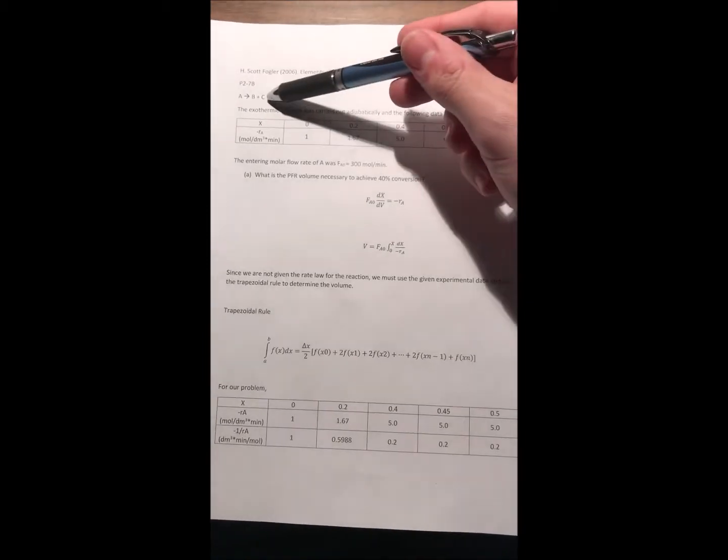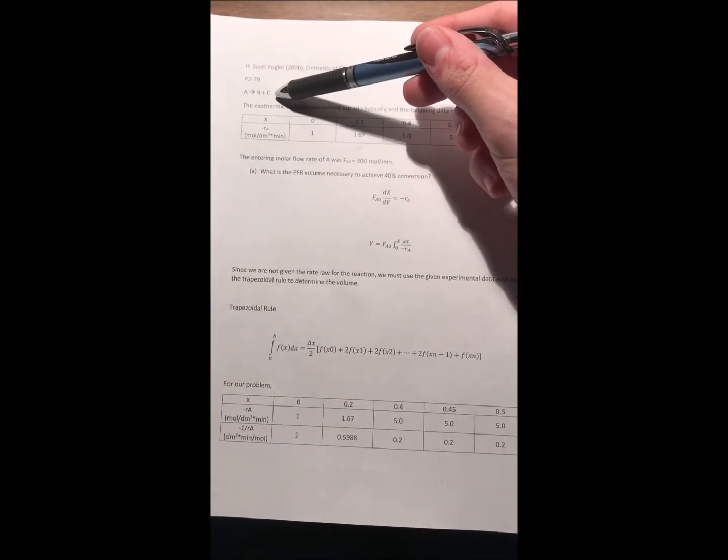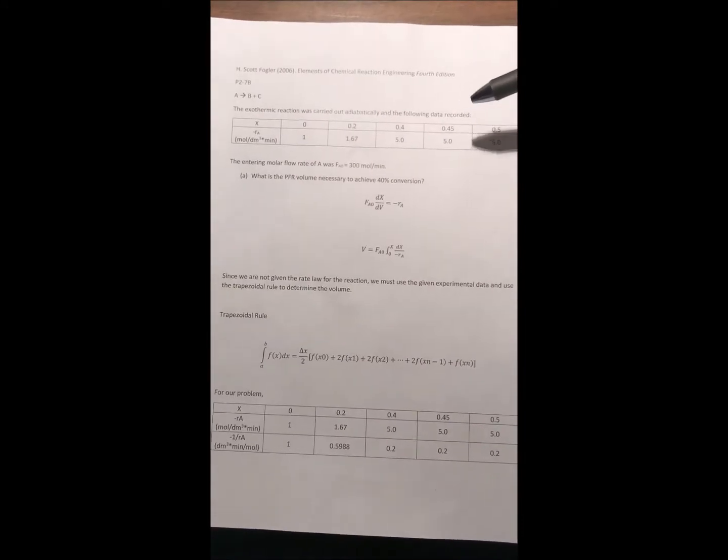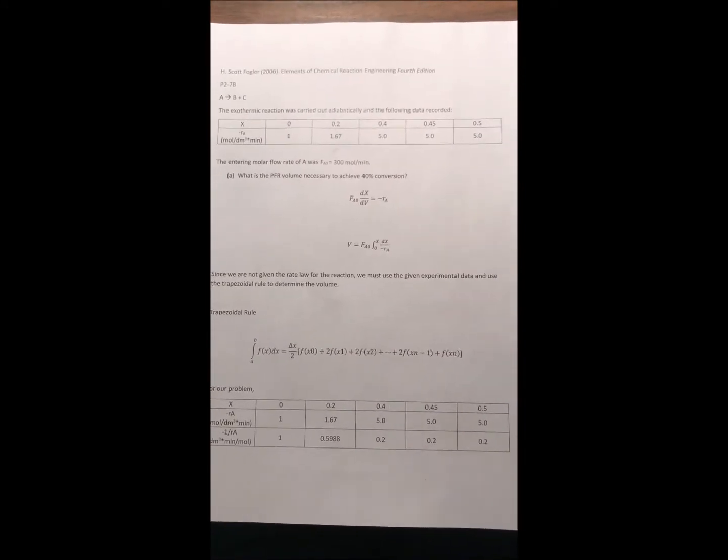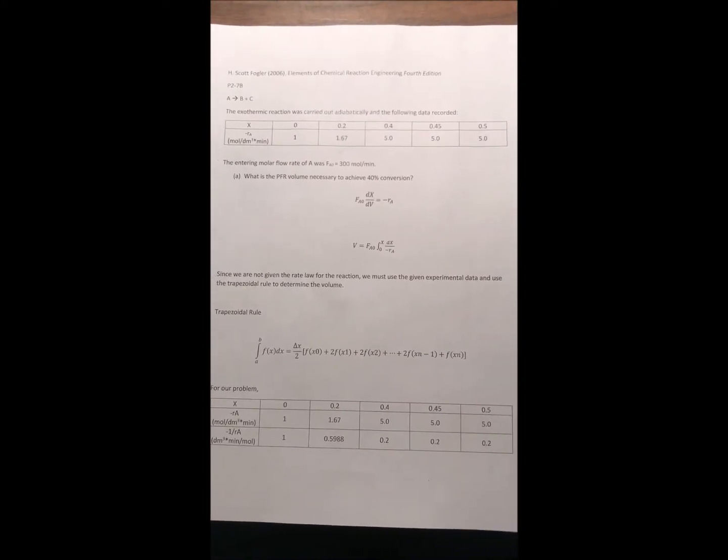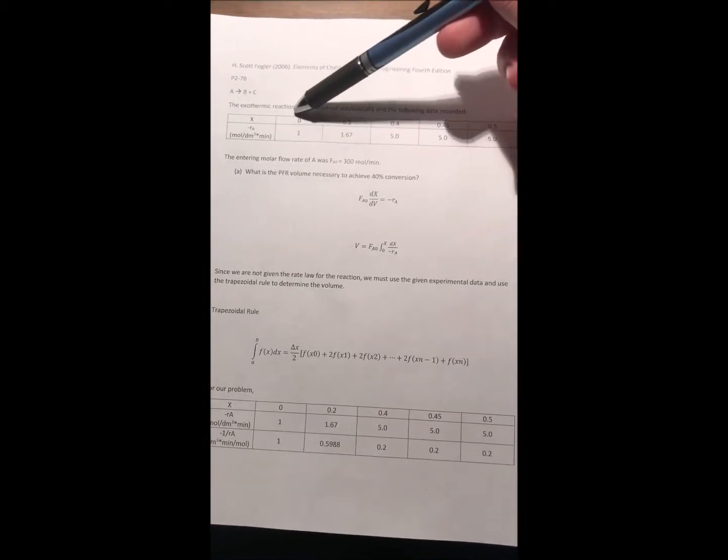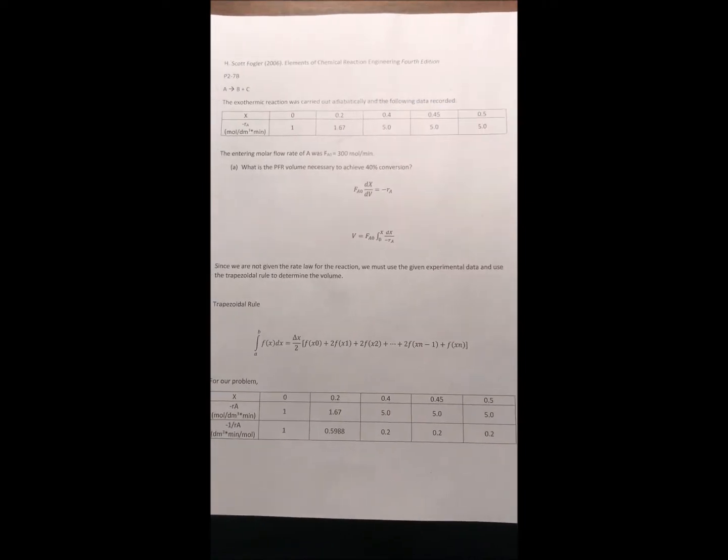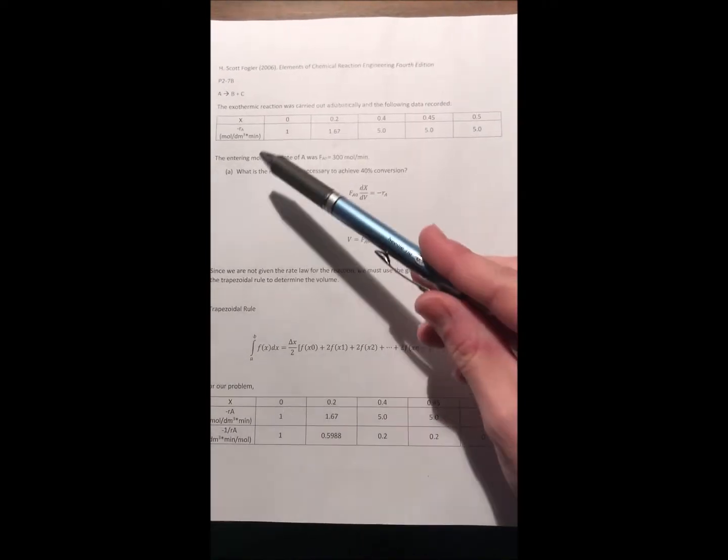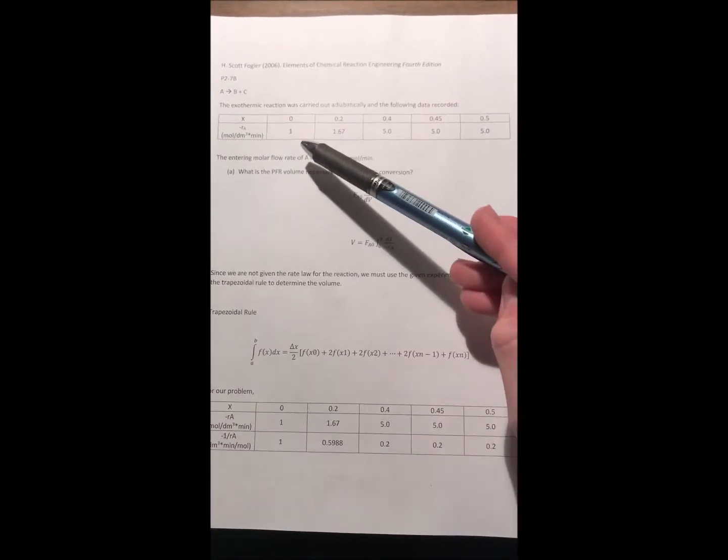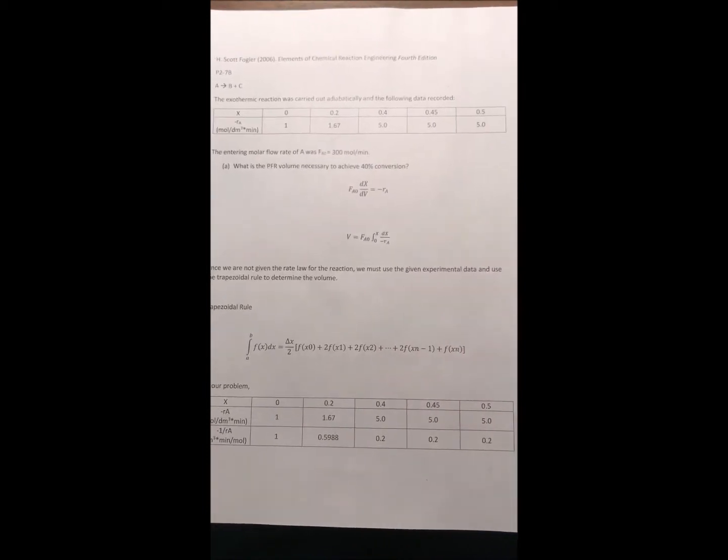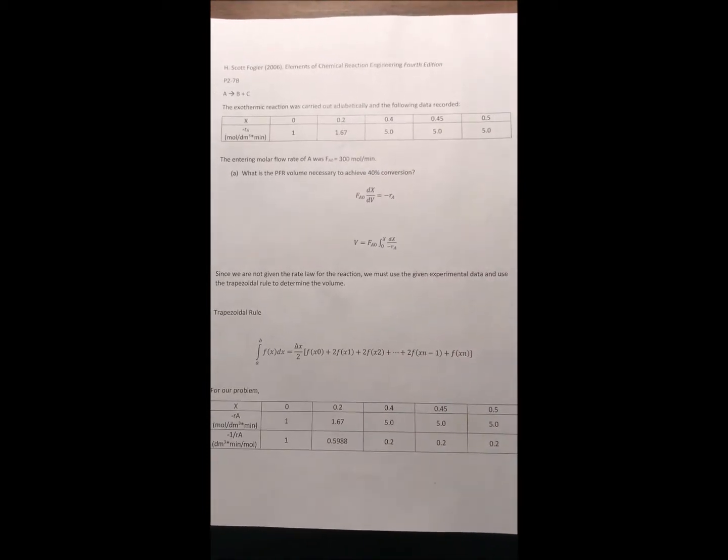And this problem shows us that species A is reacting to yield species B and C. This is an exothermic reaction and it was carried out adiabatically and the following data was recorded. Here we can see X is the different values of the conversion and then our negative RA is the different rates at the different conversion values.